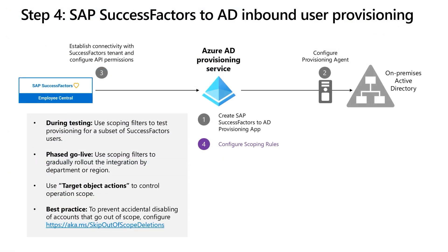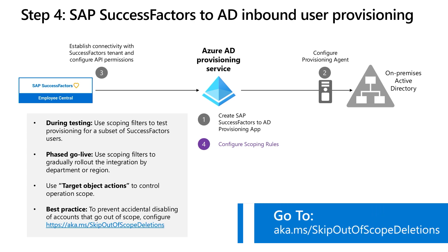We are now at step four. In this step, we will configure scoping rules, which is a mechanism to restrict the provisioning to a select group of users. This is helpful when you are initially testing the integration or if you want to perform a phased production rollout by department, country, or region. A related best practice that we recommend is setting the skip-out-of-scope deletions flag, which you can set using the link shown here.